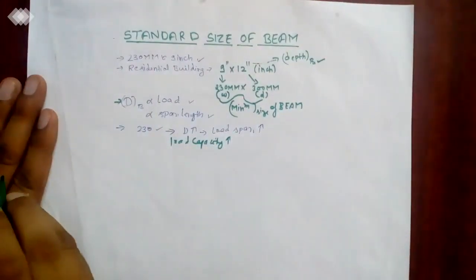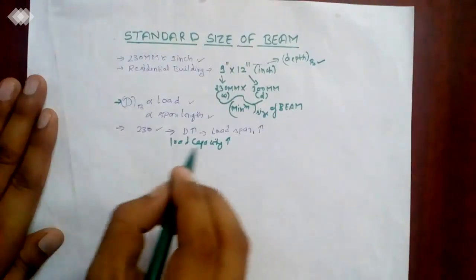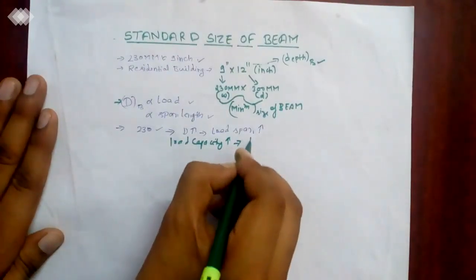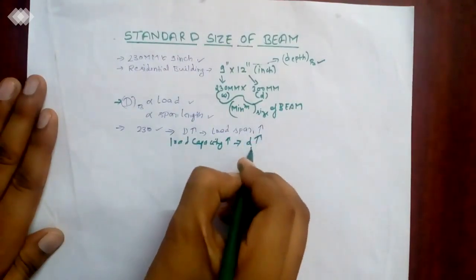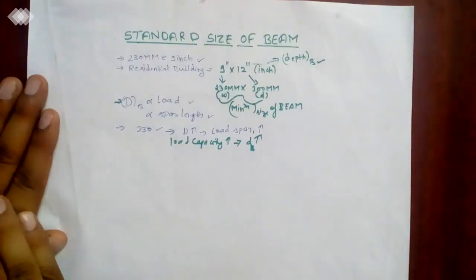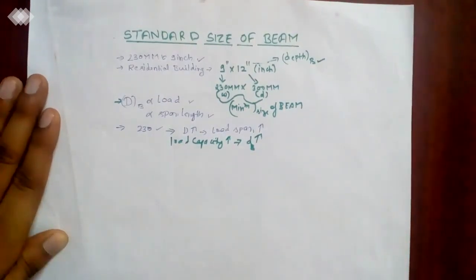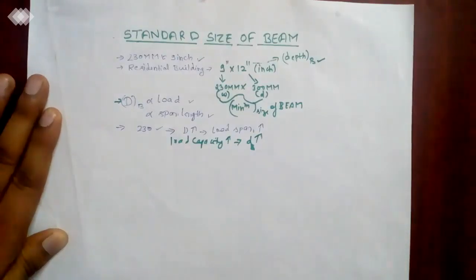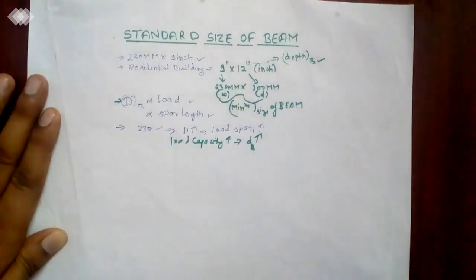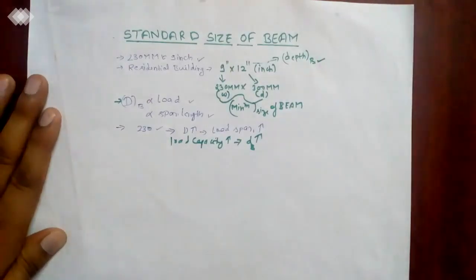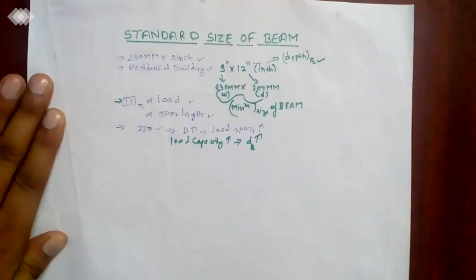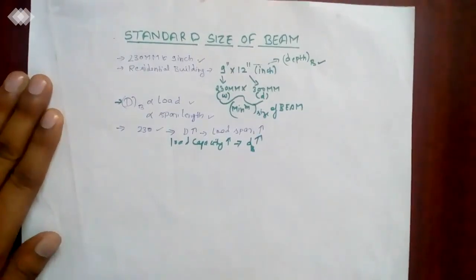So this is the minimum or you can say the standard size of RCC beam, but there is no particular reference given in the code IS 456. There is no standard size mentioned in IS codes.